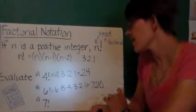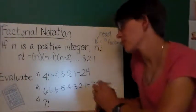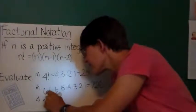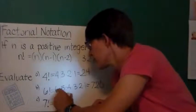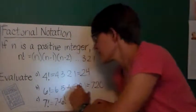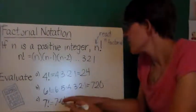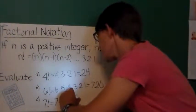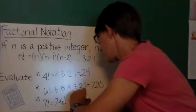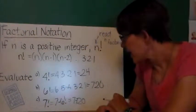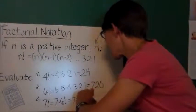7 factorial, I could do 7 times 6 times 5 times 4 times 3 times 2 times 1. Or I could just say 7 times 6 factorial. Because, hey, I already did 6 factorial right here. So, like, why make it harder on myself? So I know that I have to do 7 times 720. 7 times 720. Okay, squishing that in there. And that's going to be equal to 5,040.